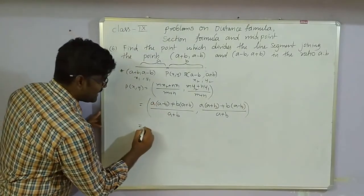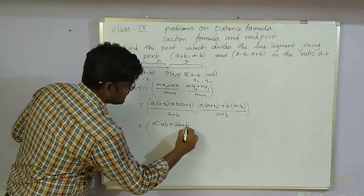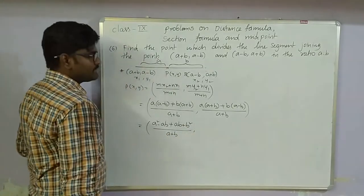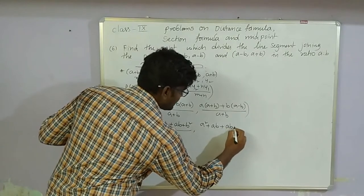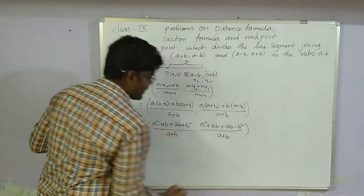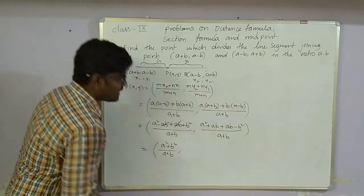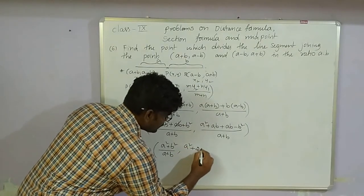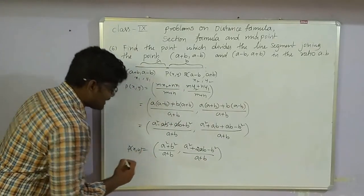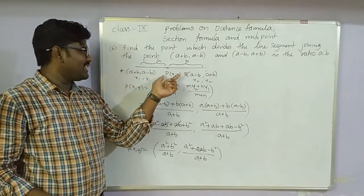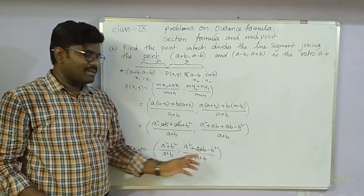Simplifying x: [a²-ab + ab+b²]/(a+b) = (a²+b²)/(a+b). For y: [a(a+b) + b(a-b)]/(a+b) = [a²+ab+ab-b²]/(a+b) = (a²+2ab-b²)/(a+b). So point P = ((a²+b²)/(a+b), (a²+2ab-b²)/(a+b)).